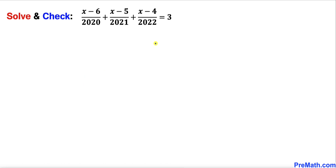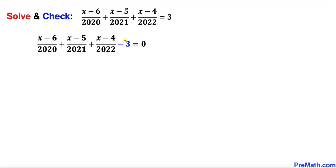Let's go ahead and get started with the solution. The very first thing we are going to do is move this 3 to the left hand side. In the next step I have moved this 3 to the left hand side, where it becomes negative 3, and now I'm going to manipulate this negative 3.